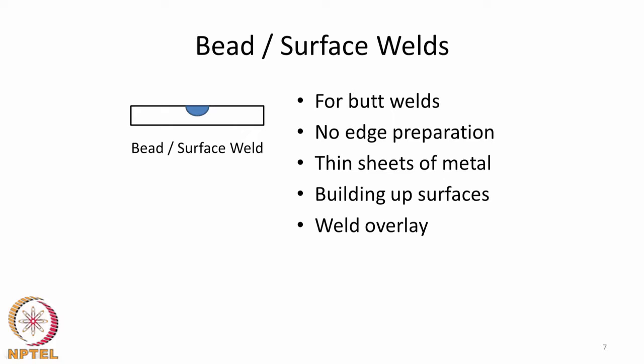A bead or surface weld is used for butt welds and requires no edge preparation; it is used for thin sheets and also to build up surfaces. For part repair, material can be removed by gouging and then built up again by making a bead on top. Weld overlay is a similar process where the objective is not joining but depositing a different material — usually corrosion-resistant or abrasion-resistant — on the surface, and this is generally done in a surface weld geometry.